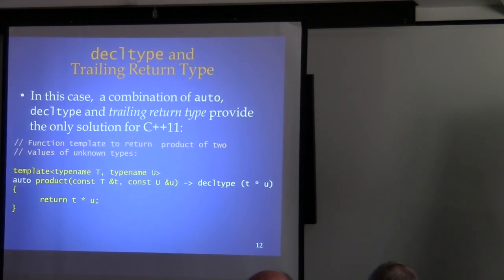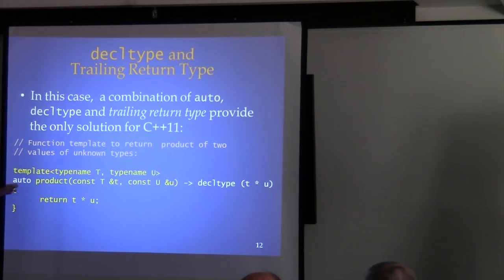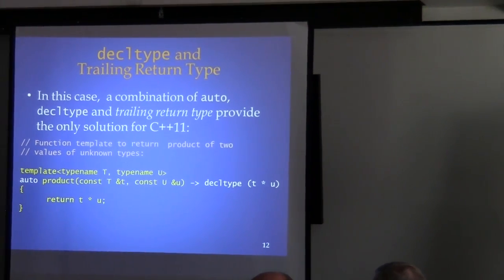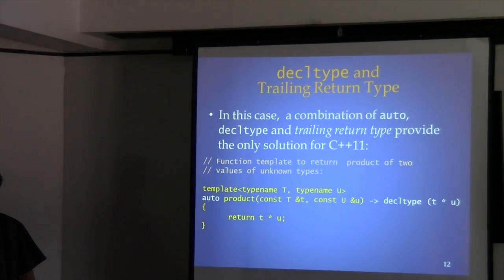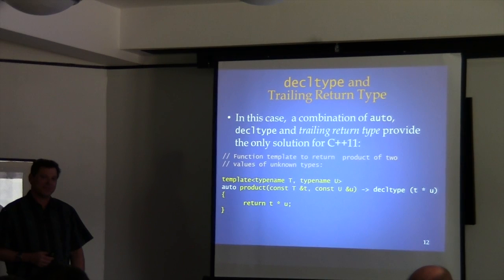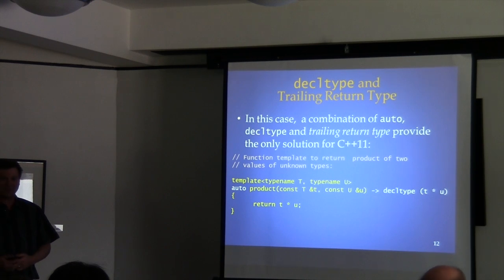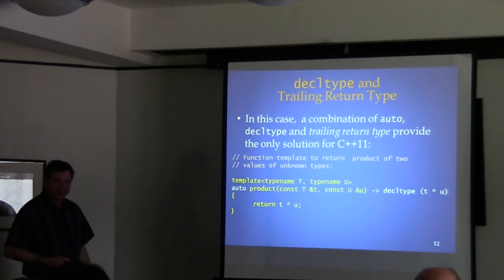Would the new use of `auto` break old code that used `auto` as a storage class specifier? Yes — that's an example of a breaking change. But `auto` has been deprecated since C++98. If you have code with `auto` in the old C style, you'll need to do a little porting, but it'll be real obvious — you'll get a clear syntax error, not a silent breaking change.